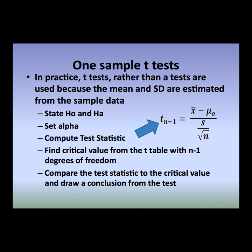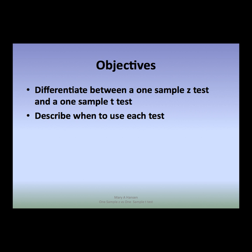In practice, T-Tests are used as the default test. The objectives of this presentation were to differentiate between a One-Sample Z-Test and a One-Sample T-Test and describe when to use each. The key difference is that the T-Test uses the sample standard deviation and sample mean, requiring critical values from the T-Table. By default, you should use a T-Test rather than a Z-Test because it is almost unheard of to actually have the population standard deviation sigma.